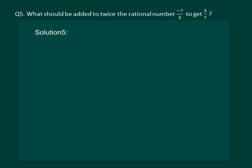It says: what should be added to twice the rational number? Twice the rational number minus 7 by 3 gives us minus 14 by 3. What should be added to this so that we get 3 by 7? So let us suppose that we add x to it.